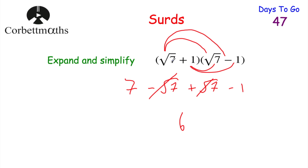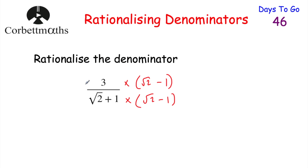Thinking back to yesterday, we had root 7 plus 1 multiplied by root 7 minus 1, and when we expanded those brackets we got 6, which is a rational number. So if we multiply both the numerator and the denominator by the conjugate of the denominator — just changing the plus sign to a minus — when we expand the brackets on the denominator we get a rational number, which is exactly what we want.